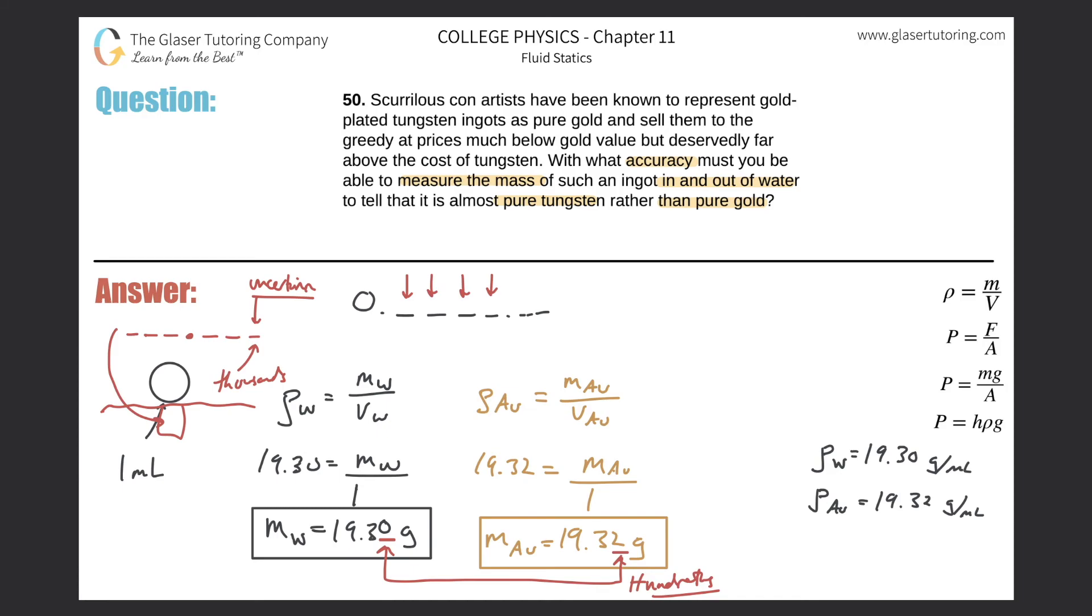That being said, it's asking us with what accuracy, where does the uncertainty lie. You can say that in order to answer a question like this, the scale measures to the thousandths place. This would be basically the accuracy you would need, a scale that measures out to the thousandths place. Alright, whether it's in or out of water, that doesn't matter. Thanks for tuning in, hope this helped. Please remember to subscribe, see you next time, take care.